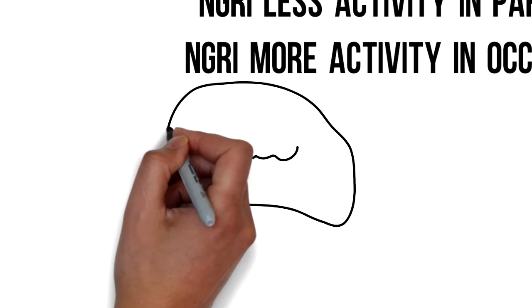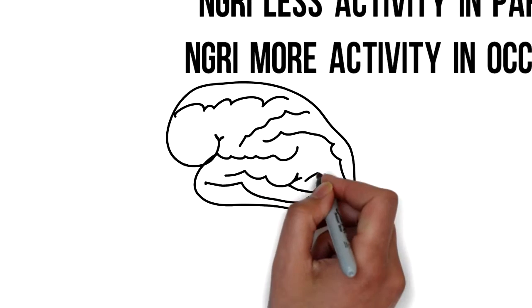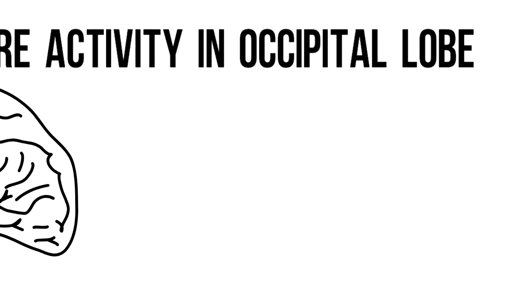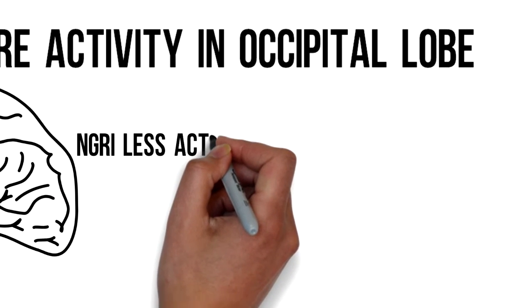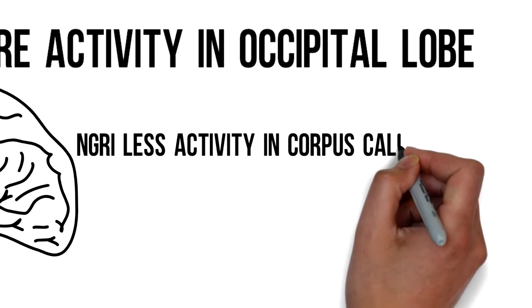Taking a look at the subcortical areas, the NGRIs showed less activity in the corpus callosum. This is the bridge of nerve fibers which connect the two brain hemispheres together and this part of the brain is associated with long-term planning.